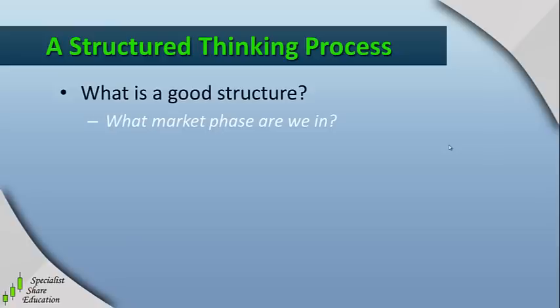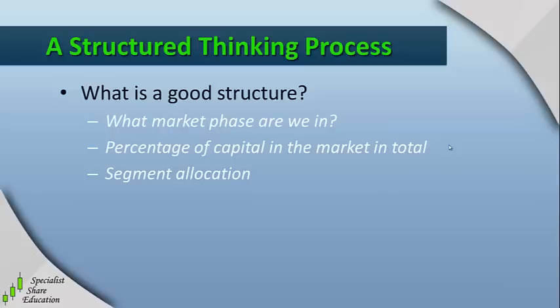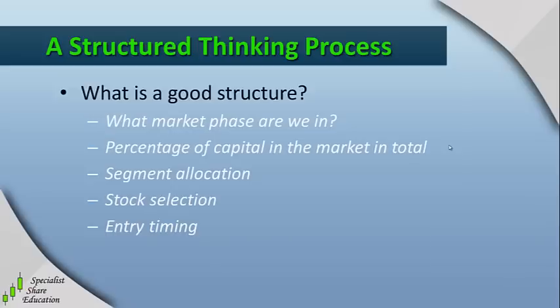So what does a good structure look like? Well, the first thing I look for is what market phase we're in, and we'll have a look at that on the next slide. The next thing is I make a decision about the percentage of capital I want to have in the market as a total or as a percentage of total funds available. The third level is the amount of capital I'm going to allocate to the various segments — I divide the market into three segments: non-resource opportunities, precious metals opportunities, and other resource opportunities other than gold. Once I've done that, I look at individual stock selection, and then I come down to the actual entry timing. So it's a cascade of thinking from the big picture down to the specific stock and the specific entry timing.